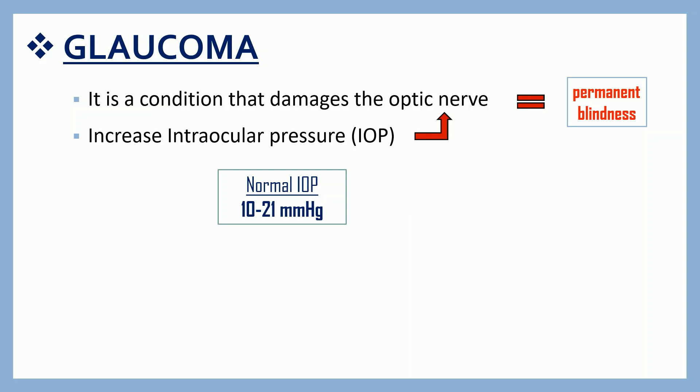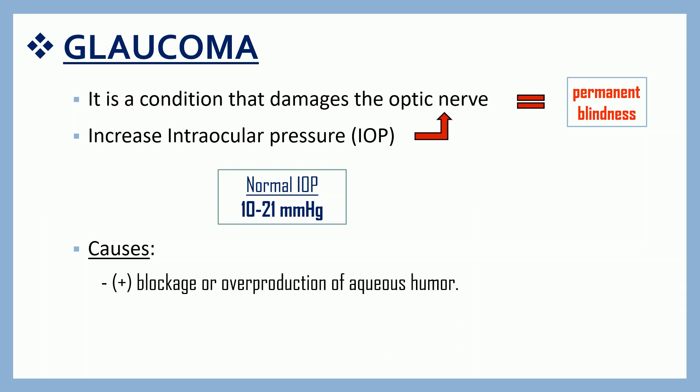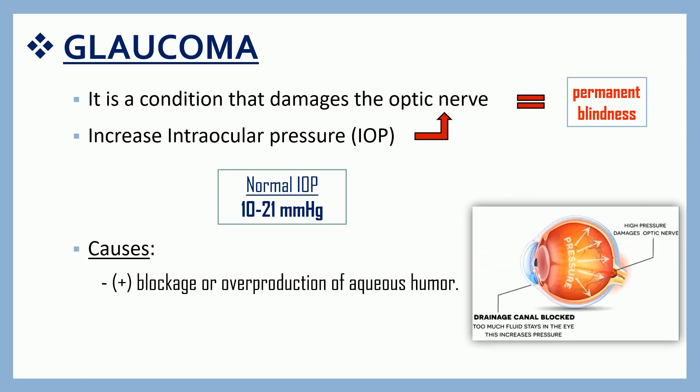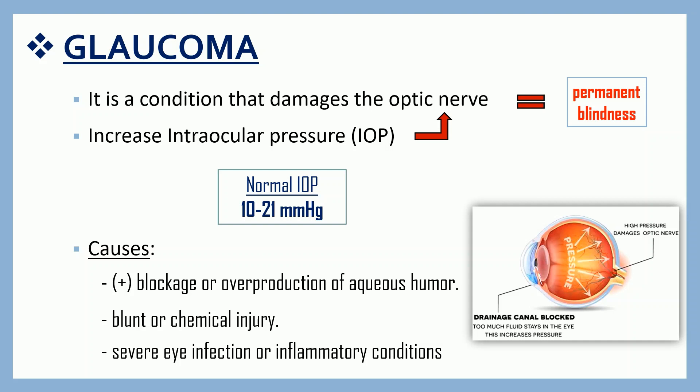The normal intraocular pressure or eye pressure is 10 to 21 millimeters of mercury. The causes include blockage or overproduction of aqueous humor. The fluid in your eye called aqueous humor usually flows out through a mesh-like channel called the trabecular meshwork. If it is blocked or the eye is producing too much fluid, the fluid builds up causing an increase in pressure. The blockage is also sometimes inherited. Other less common causes are blunt or chemical injury, severe eye infection, or inflammatory conditions.